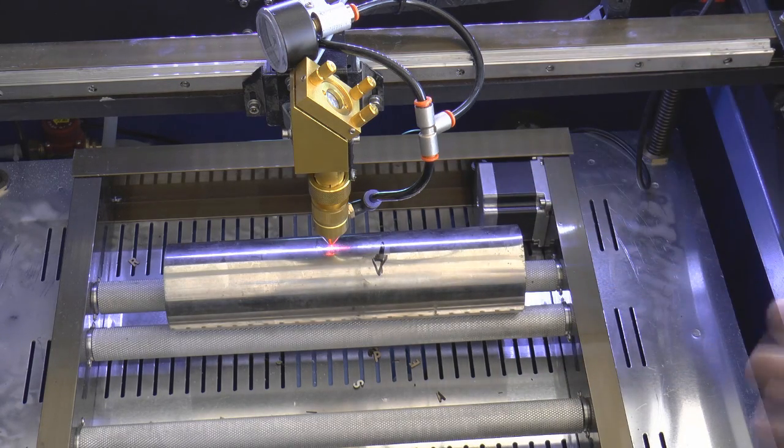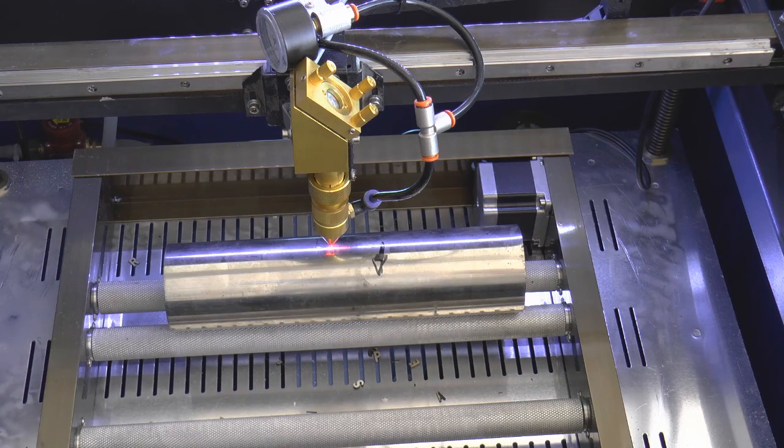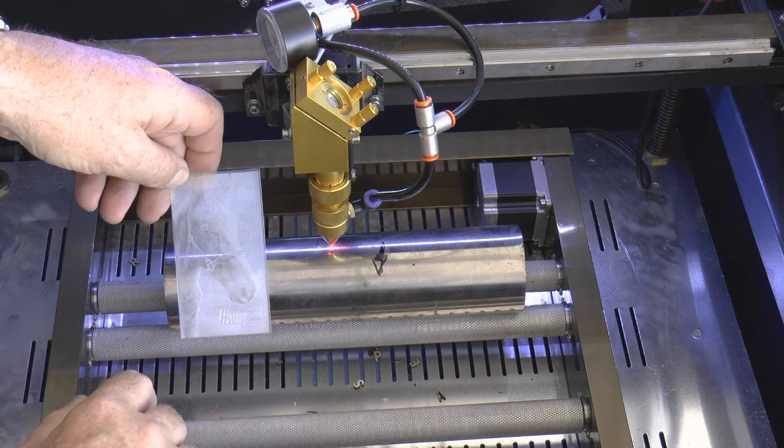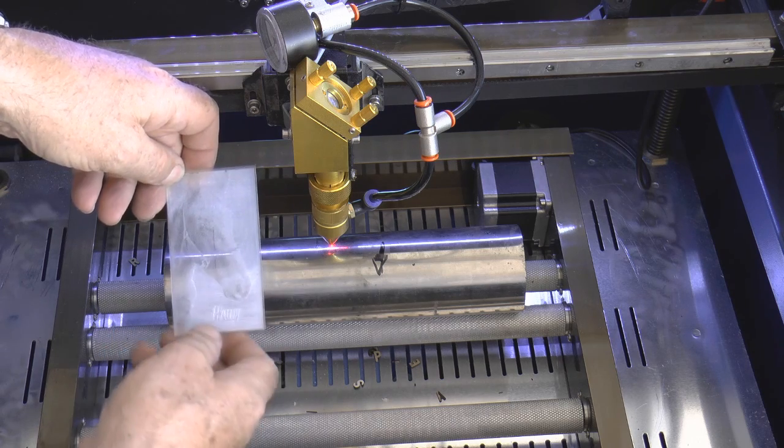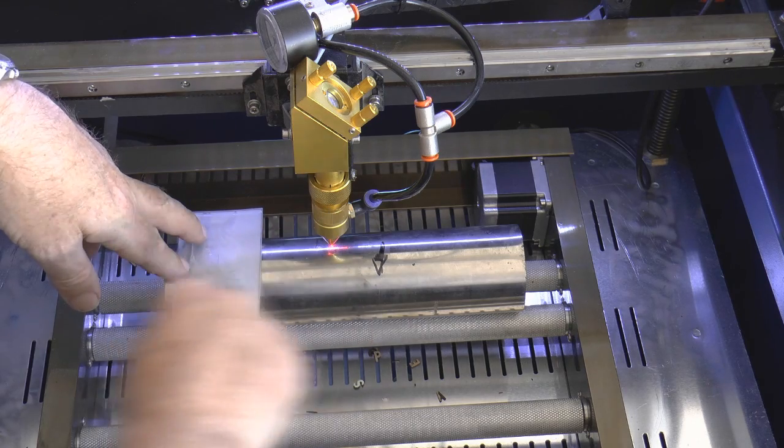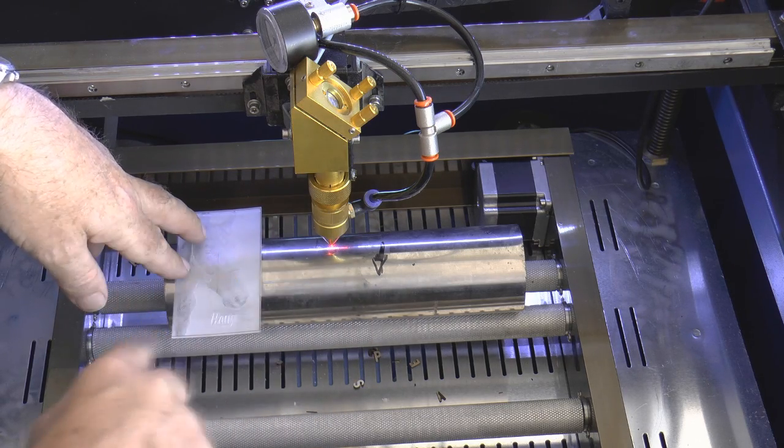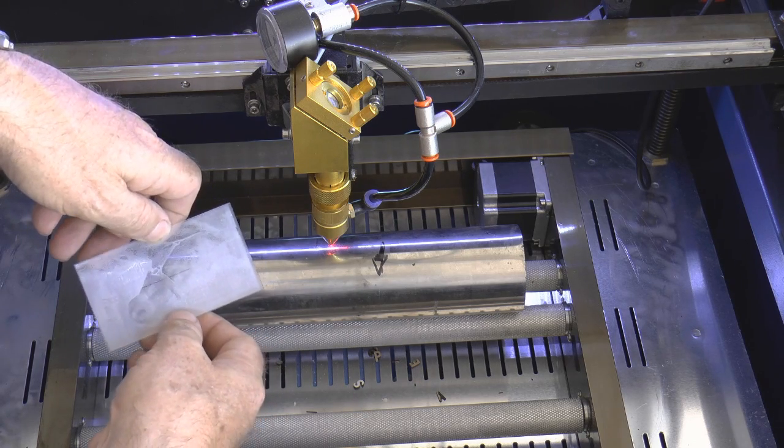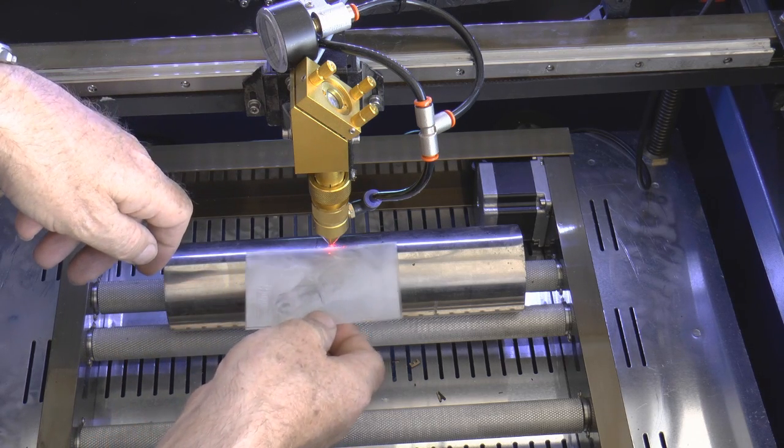That's confusion number one which we need to deal with. And then confusion number two: remember back to when we were doing bitmaps, this pattern was laying on the table like this and our x-axis was scanning across this way. Now if we want to use the same picture, the chances are we would want to use that picture this way.